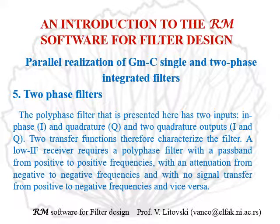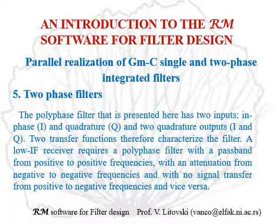The polyphase filter has two inputs — in-phase I and quadrature-phase Q — and two quadrature outputs I and Q, shifted by 90 degrees. Two transfer functions therefore characterize the filter. A low intermediate frequency receiver requires a polyphase filter with a passband at positive frequencies, with attenuation at negative frequencies, and with no signal transfer from positive to negative frequencies and vice versa.